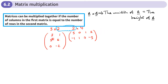The first matrix defines which row the answer goes in, and the second matrix defines which column it goes in — first, second, third, or fourth column. For example, if I multiply the second row by the third column, doing 5 times 1 plus 6 times 7, that number goes in the second row and third column of my answer matrix.